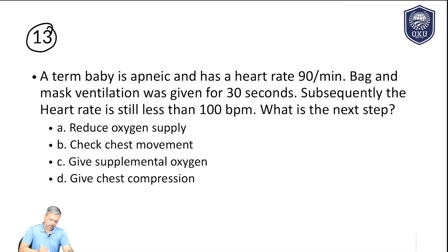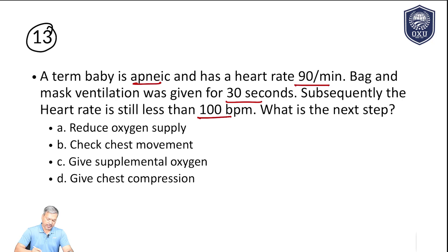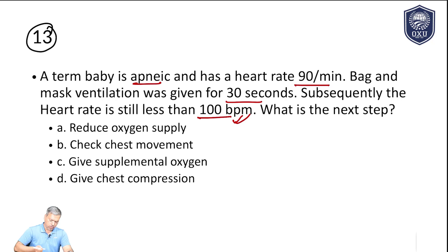Question number 13: a term baby is apneic — meaning the baby is not breathing — and has a heart rate of 90 per minute. Bag and mask ventilation was given for 30 seconds. Subsequently, the heart rate is still less than 100. What is the next step? This is a very common question in FMG or other licensing exams. After 30 seconds of bag and mask ventilation the heart rate is still less than 100, so something is wrong.